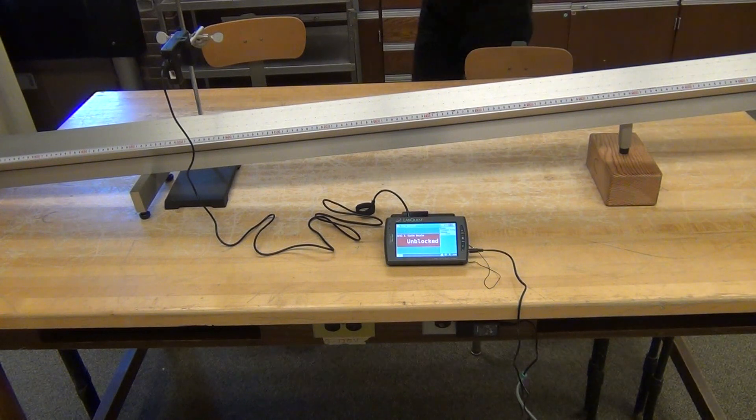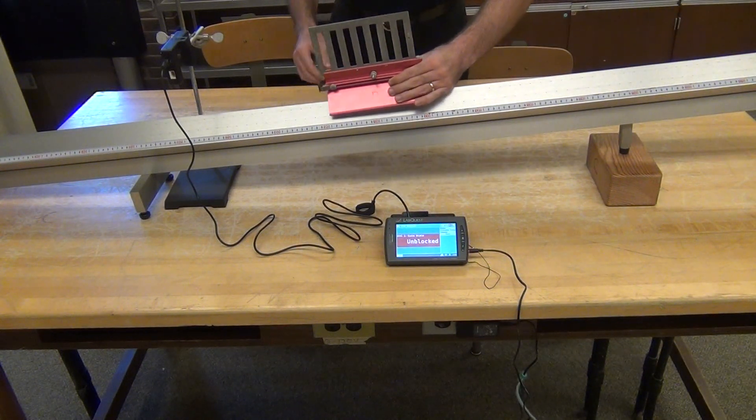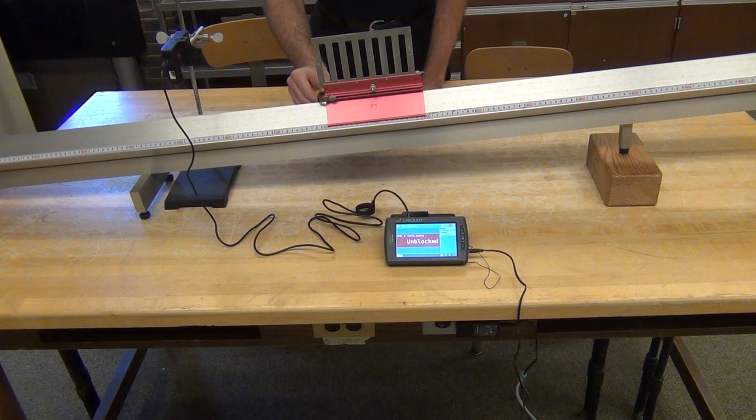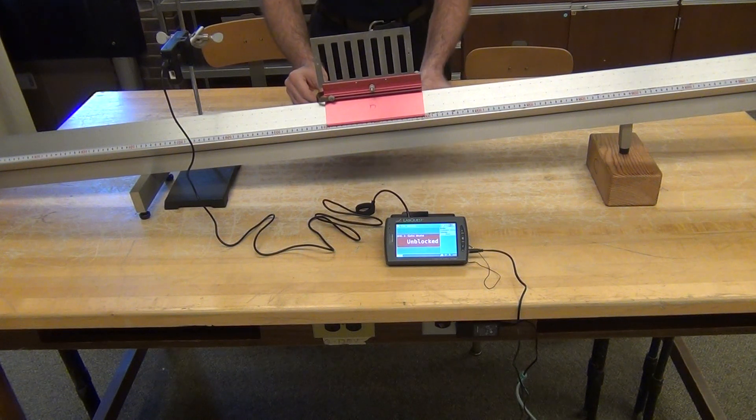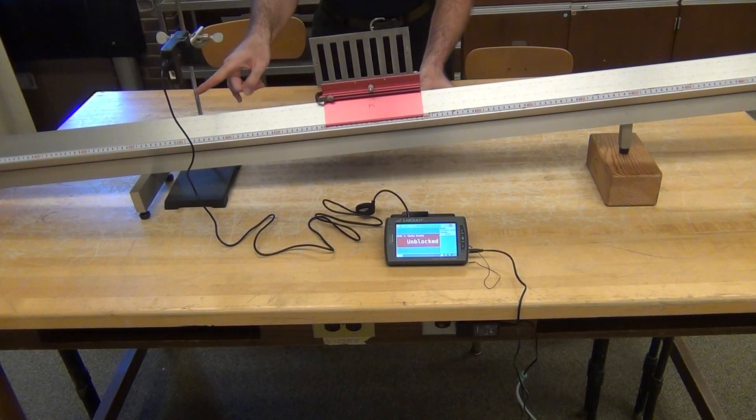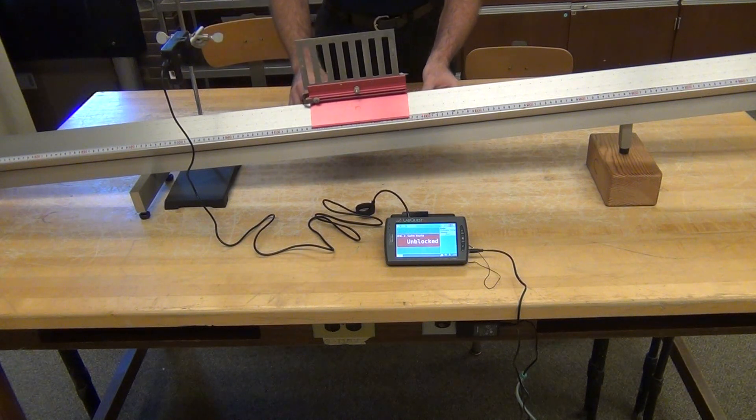I'm going to gently place the glider on the air track, making sure that the A edge is pointing downhill and close with my Photogate.